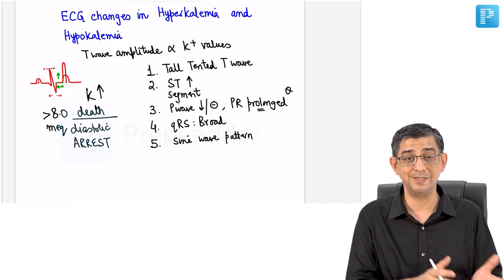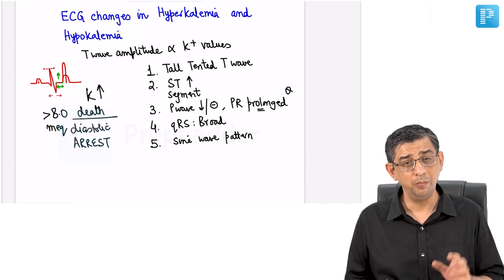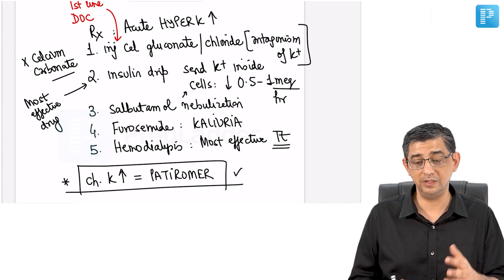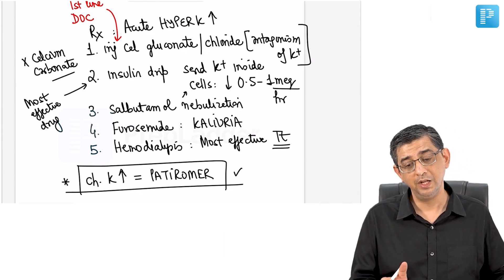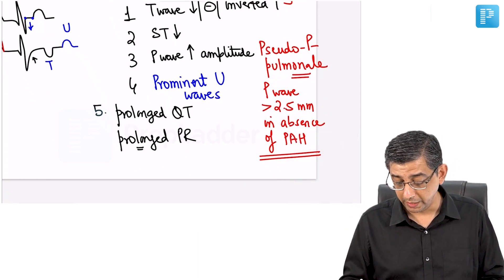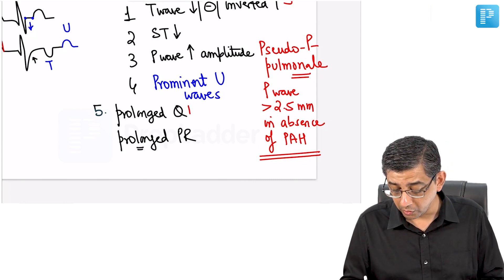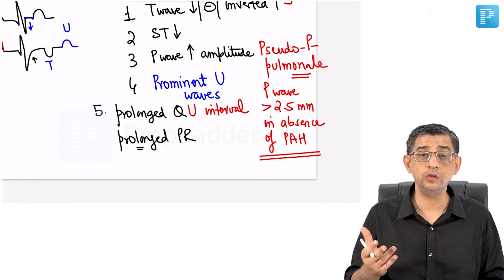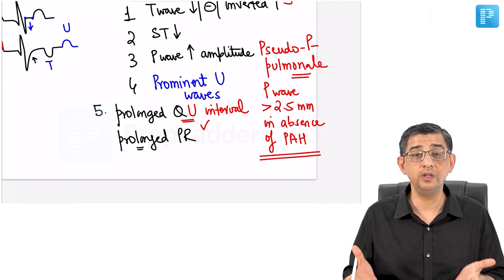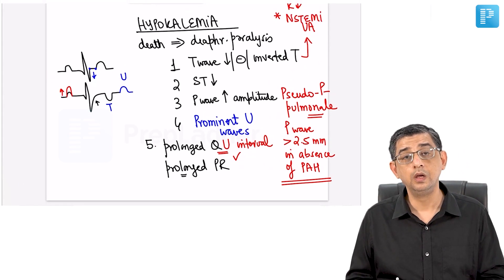PR prolongation in both hypo- and hyperkalemia is an important exam point. Some candidates incorrectly assume PR is shortened in one of them — it is prolonged in both due to the changed potassium gradient affecting conduction speed. Also note: in some questions the examiner may write prolonged QU interval rather than QT interval. This is deliberate — not an error — because if the T wave has disappeared, the correct term becomes QU interval. Hypokalemia patients can develop arrhythmias due to QT prolongation.